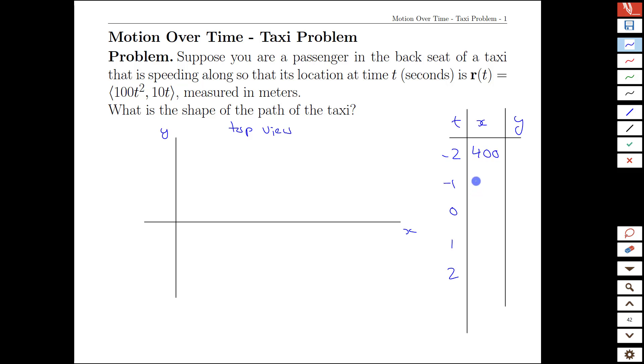We'd actually get a repeat of those same values again as we square positive numbers this time and get the same final output. Our y's are simply 10 times the t's, so this would be negative 20, negative 10, 0, 10, and 20.